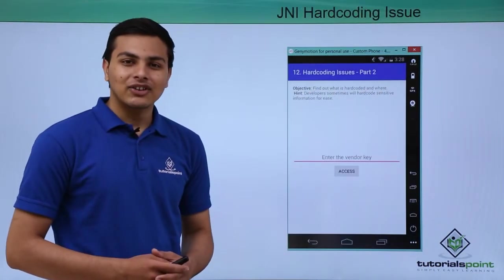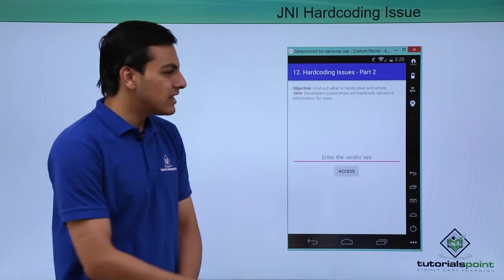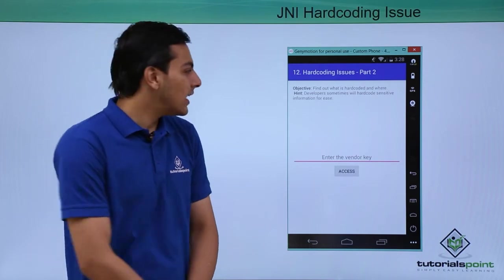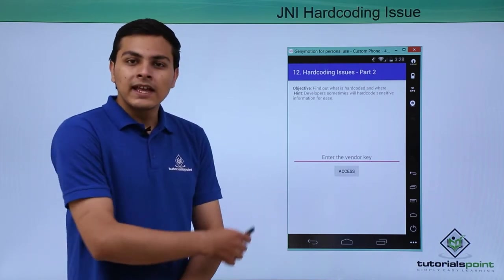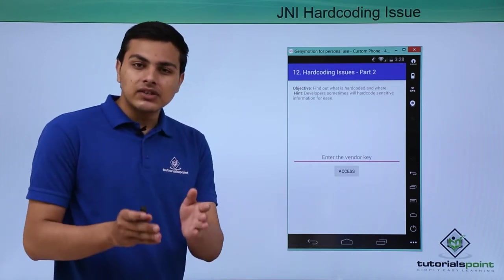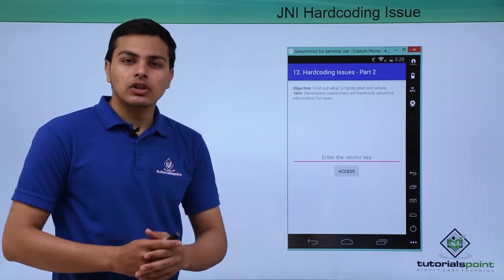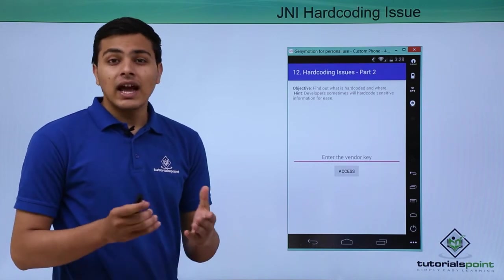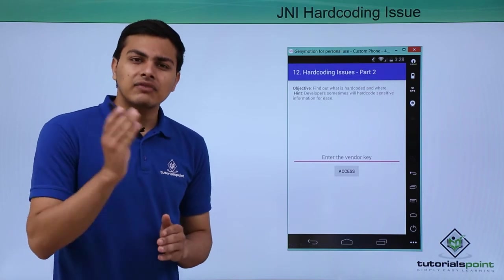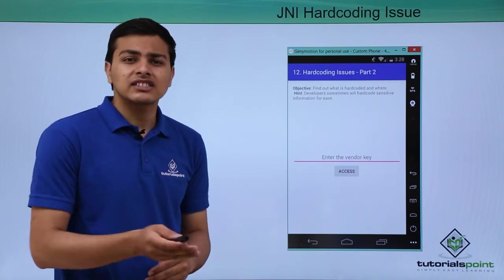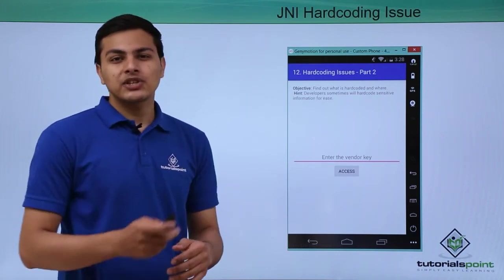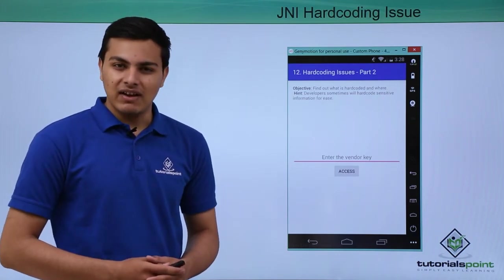Now let's talk about the JNI hard coding issue in DIVA. This issue is named hard coding issues part 2. Our objective is to find the vendor key which is actually hard-coded in the source code of the DIVA application. Since it's called JNI hard coding, this gives us an idea that the vendor key might be present in some third-party libraries rather than in the Java source code.